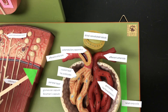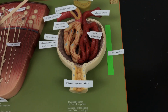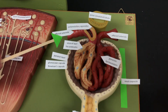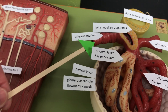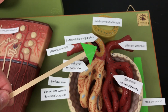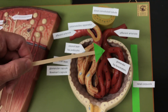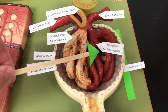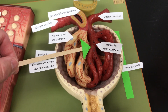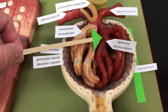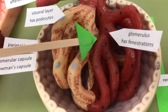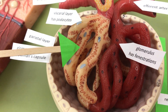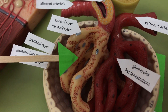This portion of the model is an enlargement of the renal corpuscle. Blood is brought to the renal corpuscle through the afferent arteriole. The blood is going to flow through the glomerulus, which is a ball of leaky capillaries with little tiny fenestrations — these are the little holes.